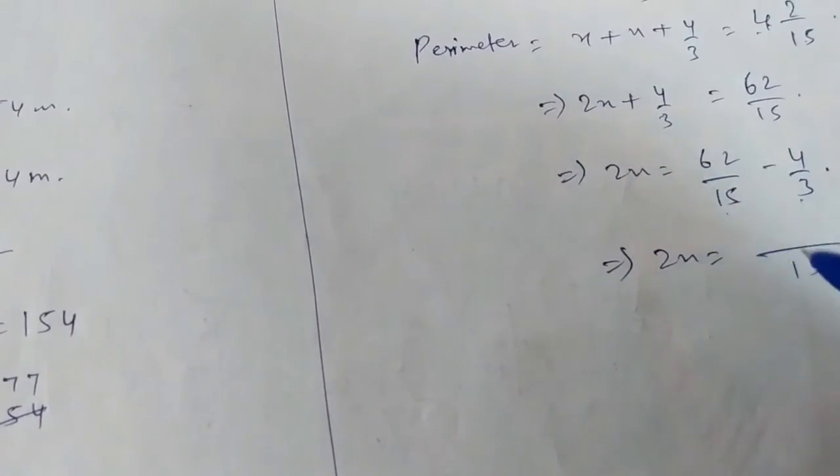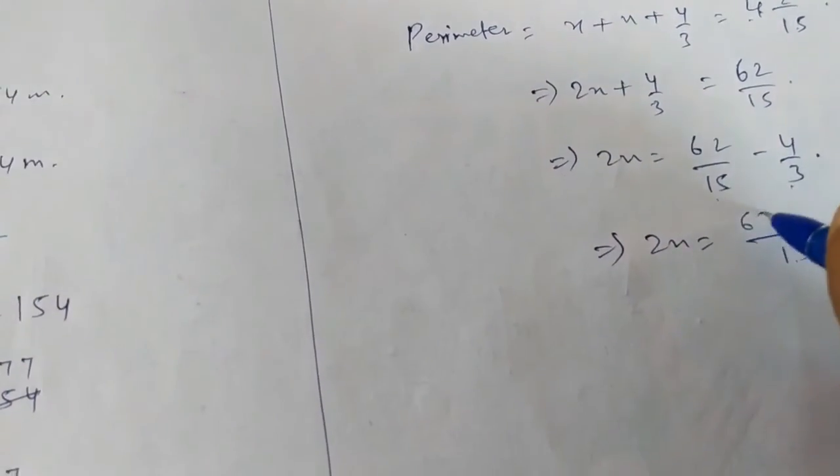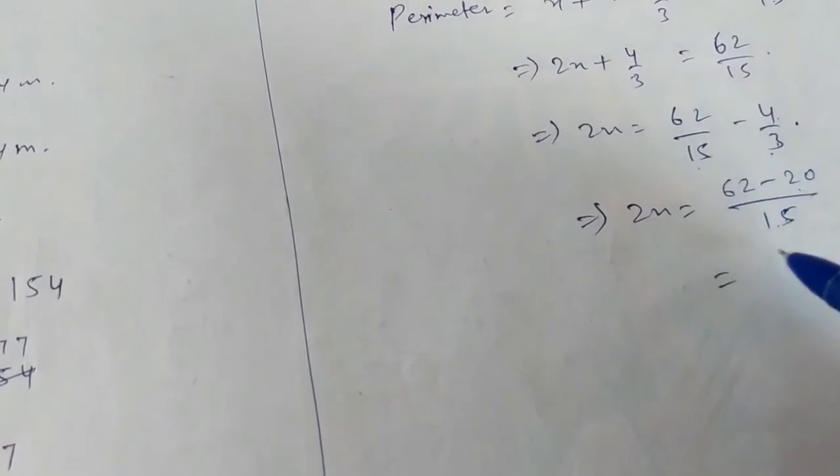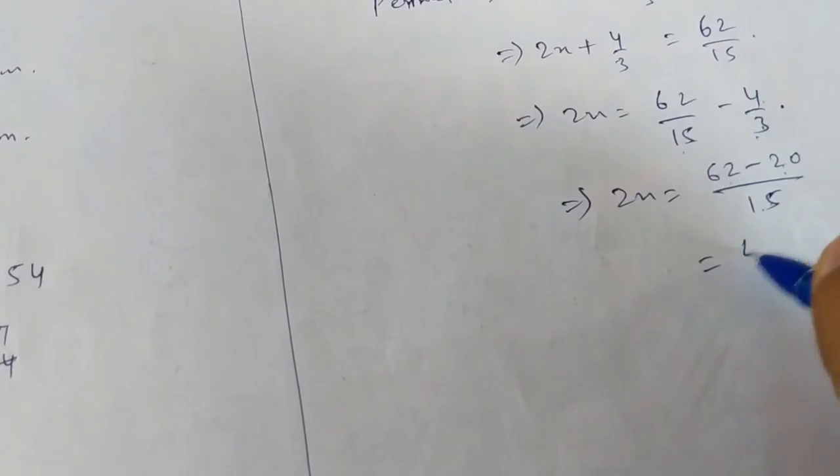Taking LCM as 15, we get 62 minus (4 by 3 times 5) which is 20. So 62 minus 20 is 42 over 15.